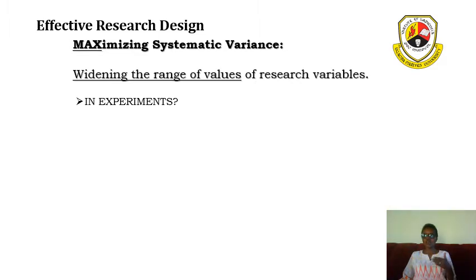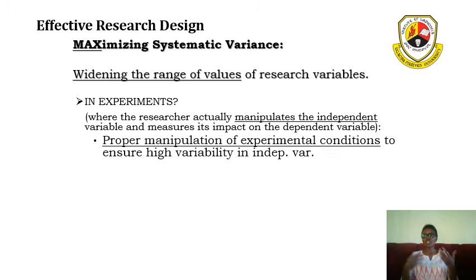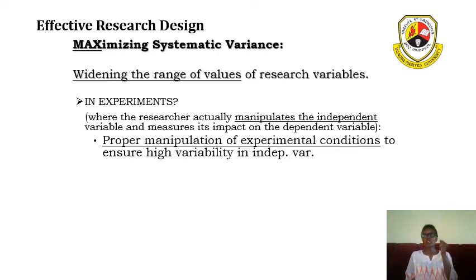Maximizing systematic variance considers widening the range of values of research variables. Let us say we are doing an experiment. In quantitative research we always have an independent variable and a dependent variable, and we want to ensure that the two actually have a causal relationship. One of the advantages of an experiment is that you can control the conditions. For example, if a researcher is trying to determine if a certain drug can fight a certain disease, within a lab experiment the researcher can determine that relationship.